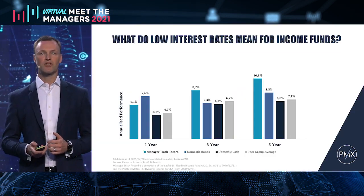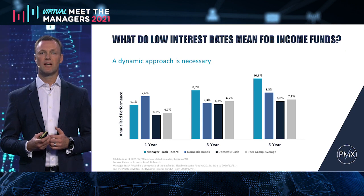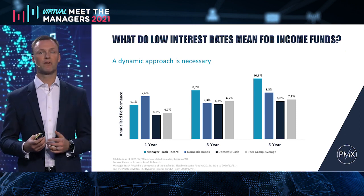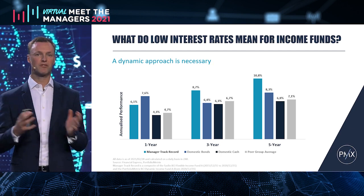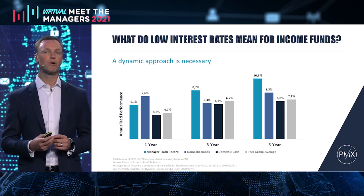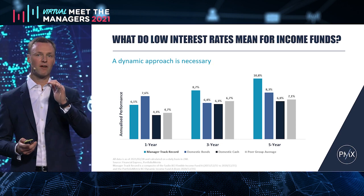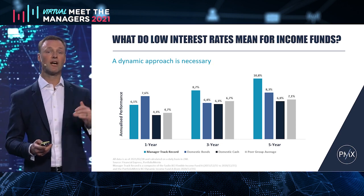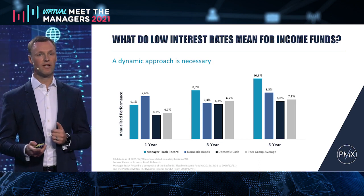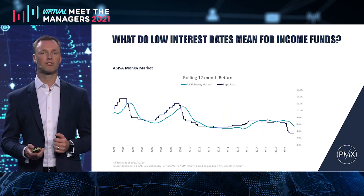The outlook for income funds — the challenge you've got as an income investor: if you look over the last five years, cash gave you just under 7%, income funds in the multi-asset income category gave you a little bit more than cash, and bonds gave you just over 8%. By using a flexible approach, we were able to earn quite a bit more by combining both income and bond assets. But importantly, you'll notice how cash rates have gone from just under 7% on average to just over 6% to now just over 4% to the end of February this year. This means rates are lower and you need a dynamic approach — you need to do something differently to how you've done in the past.